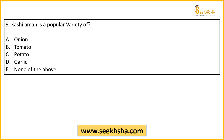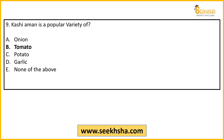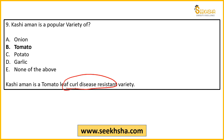Ninth question: Kashi Aman is a popular variety of — A) onion, B) tomato, C) potato, D) garlic, E) none of the above. The right answer is B) tomato. Kashi Aman is a popular variety of tomato and is a leaf curl disease resistant variety — that is its special characteristic, so remember it.